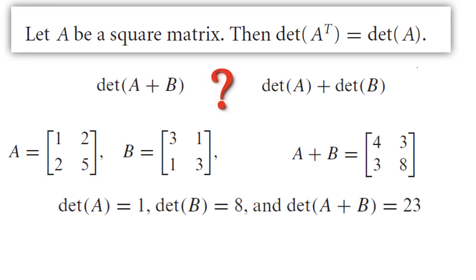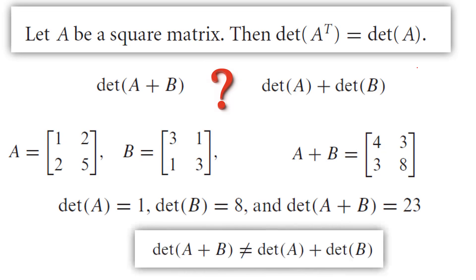Obviously the determinant of A is 5 minus 4, which is 1, and the determinant of B is 9 minus 1, which is 8. The determinant of A plus B, however, is 23. So as you can see, 9 is not equal to 23. So in general, the determinant of A plus B is not the same as the determinant of A plus the determinant of B.